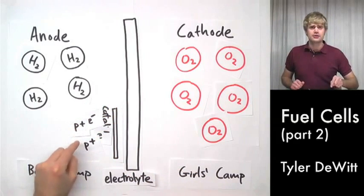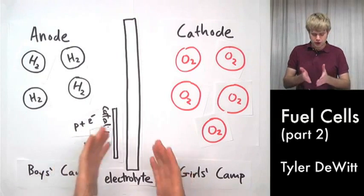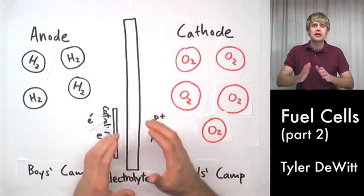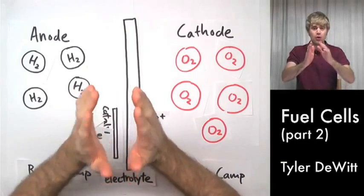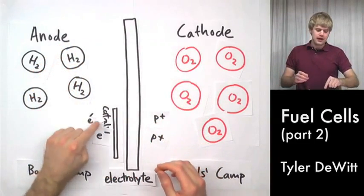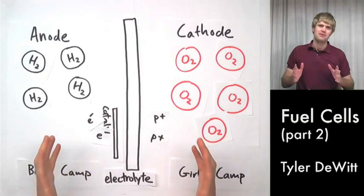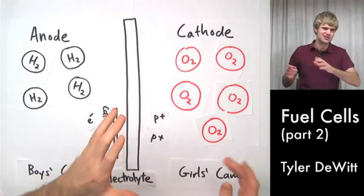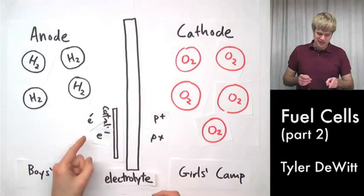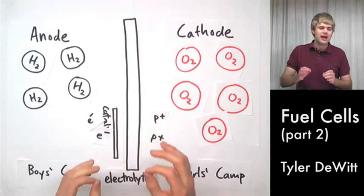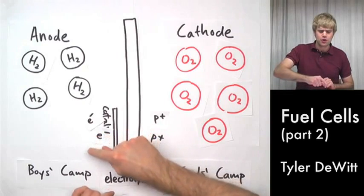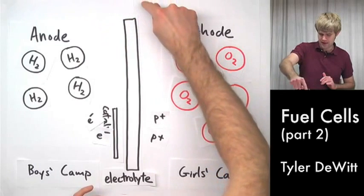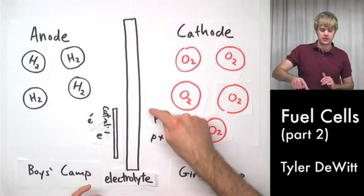These two protons are like the super skinny kids. And it turns out that they can squeeze right through the electrolyte the way really skinny kids could squeeze through the slats of a fence or maybe crawl right under it. The electrons here, they're not quite so lucky. They're like the chunky kid who always eats the extra candy bar, hides it in his dorm because the camp won't let him have it. And they're not able to fit through the fence. So, what they have to do is they have to take the cow path that goes all the way around the back of the camp, around the fence, around the forest.